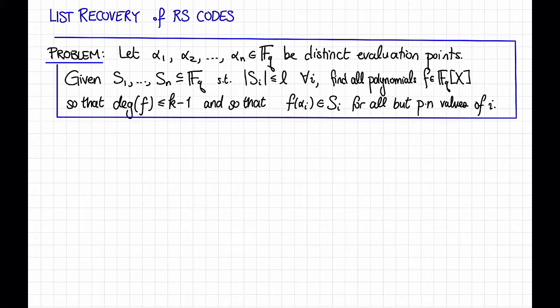More precisely, we have the following problem. Let's fix some distinct evaluation points alpha1 through alphan in Fq, and suppose we are given lists S1 through Sn, which are subsets of Fq, so that each has size at most little l. Then our goal in the list recovery problem when specialized to Reed-Solomon codes is to find all polynomials F over Fq in some variable x that have degree at most k minus 1, and so that F of alpha i lives in the list Si for all but p times n values of i.